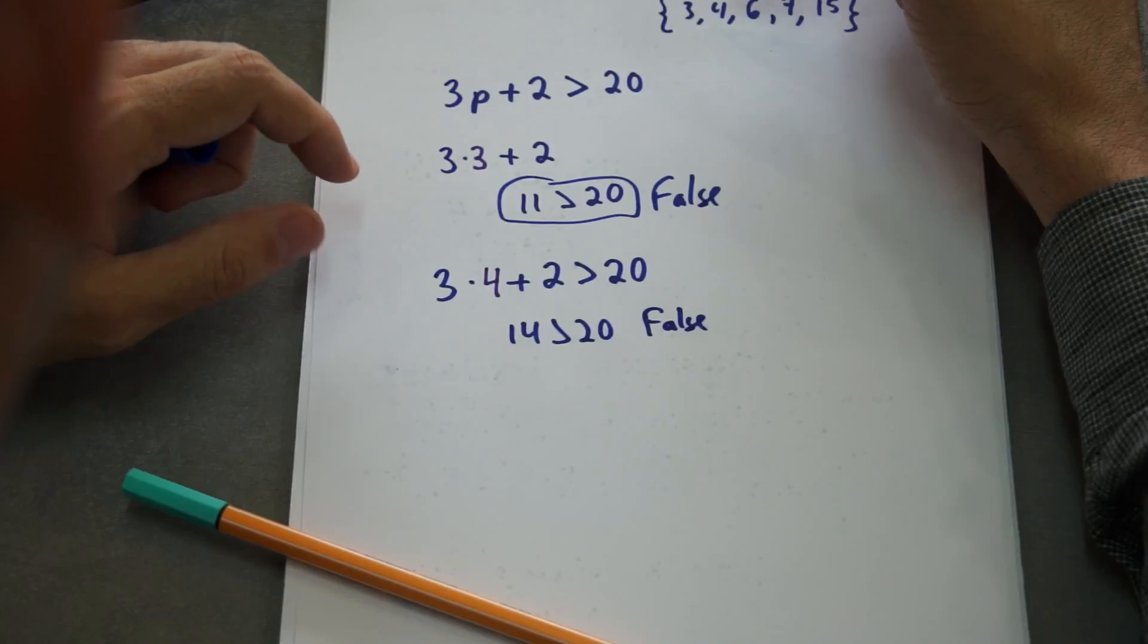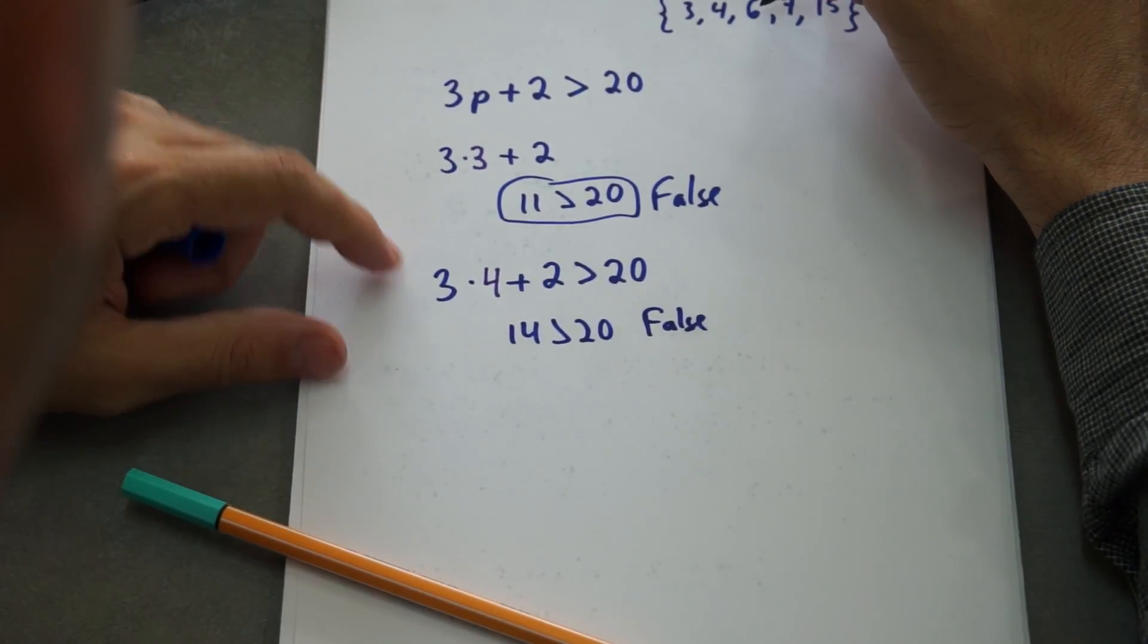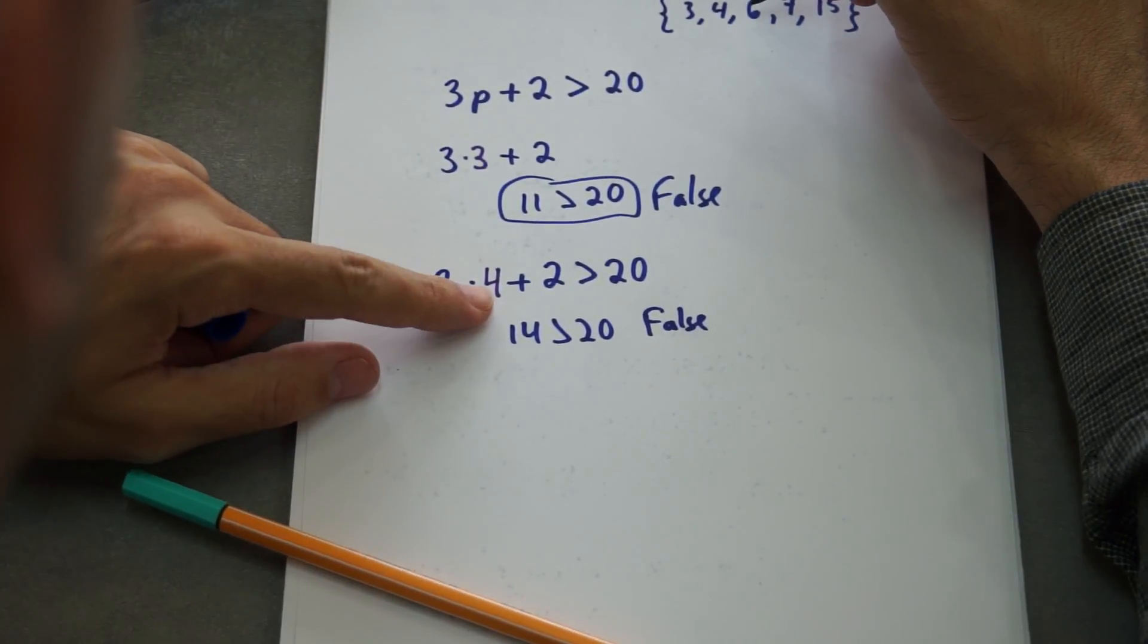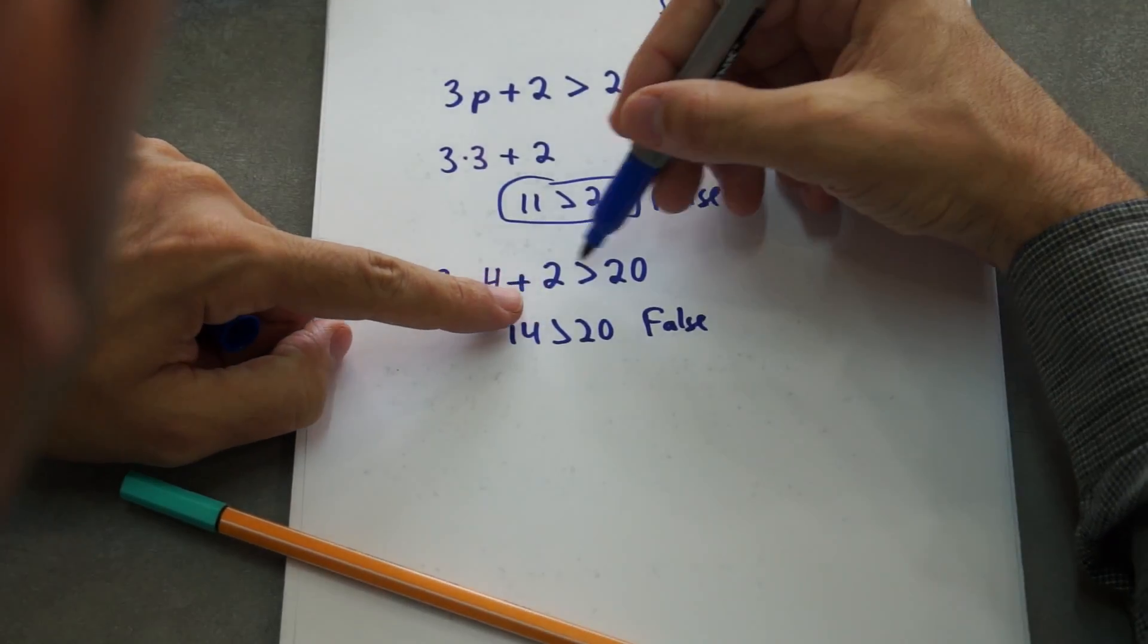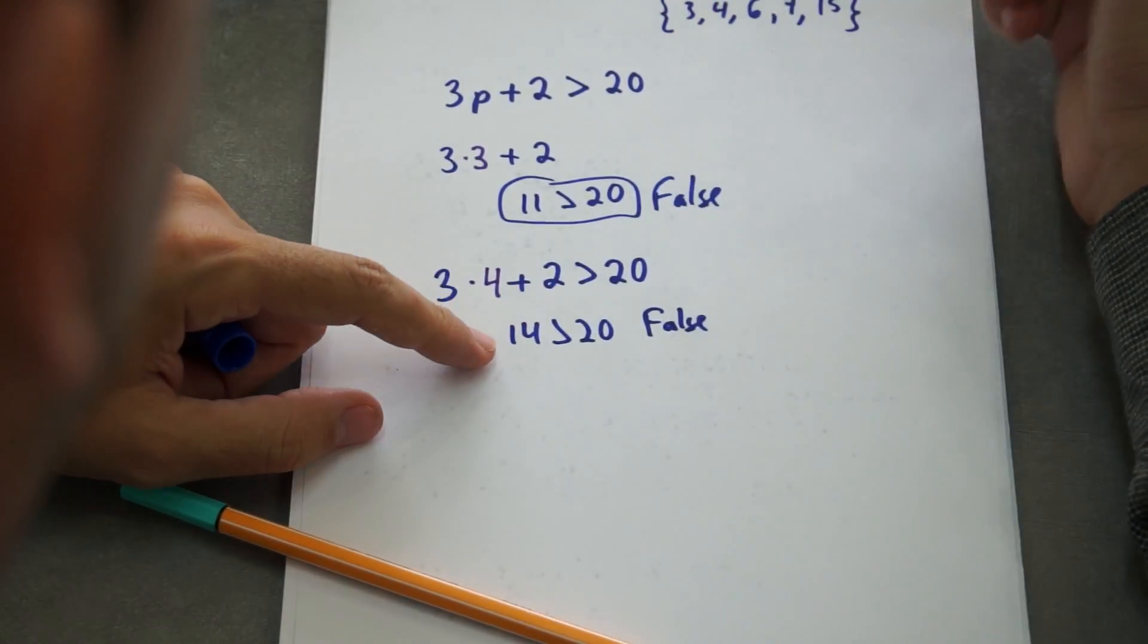So 4 is not part of the solution. We try with 6. 3 times 6 is 18 plus 2 is 20. 20 is not greater than 20, so it's false too.